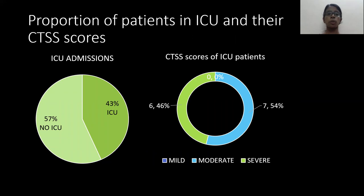Coming to the proportion of patients in the ICU and their CTSS scores: 43% of the patients required ICU admissions with additional ventilatory support. Of the 43%, majority of the patients had moderate disease, and the rest had severe disease.